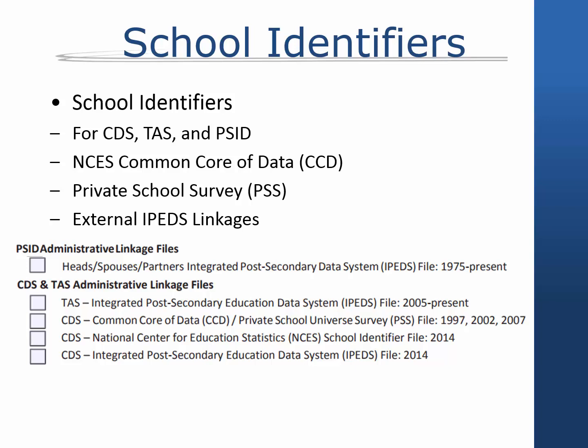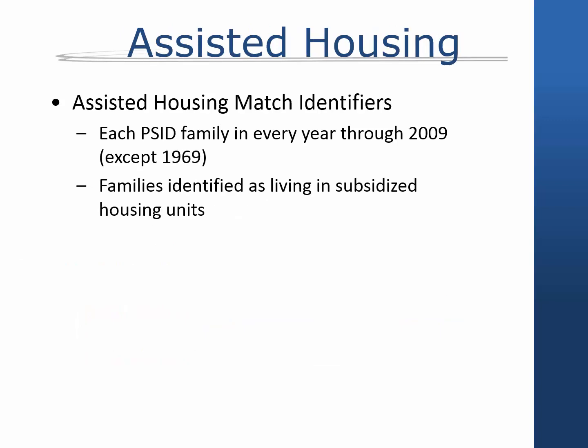These identifiers may be linked to the U.S. Department of Education's National Center for Education Statistics (NCES) Common Core Data, Private School Universe Survey, and Integrated Postsecondary Education Data System. Each PSID family in every year through 2009, except 1969 for which the addresses are unavailable, has been identified as living in subsidized housing units. Subsidies may be provided by the U.S. Department of Housing and Urban Development, the Farmers Home Administration, through tax credits administered by the Department of Treasury.